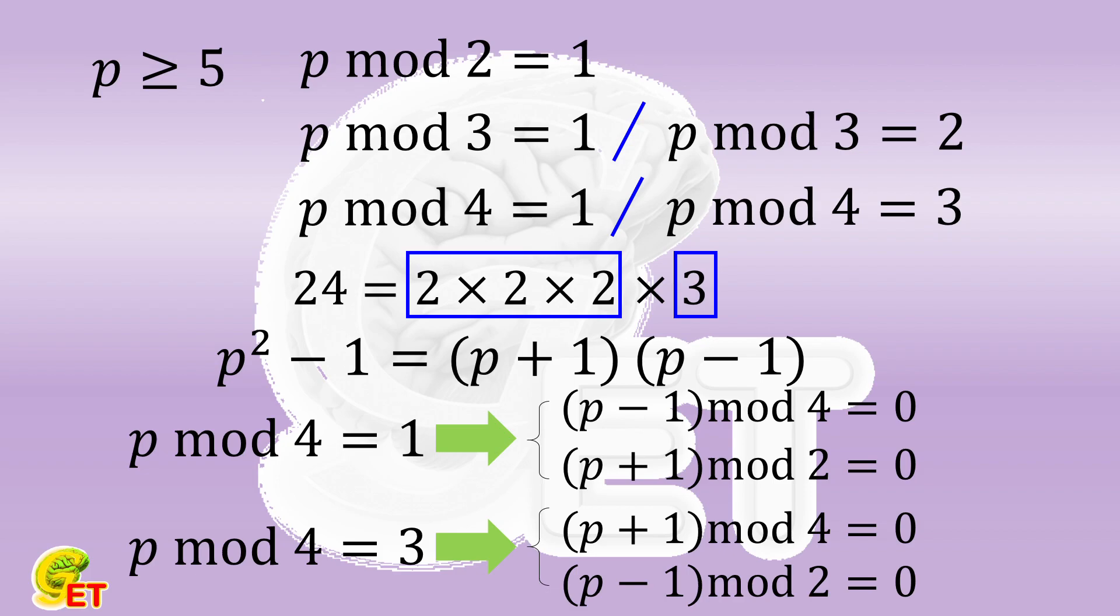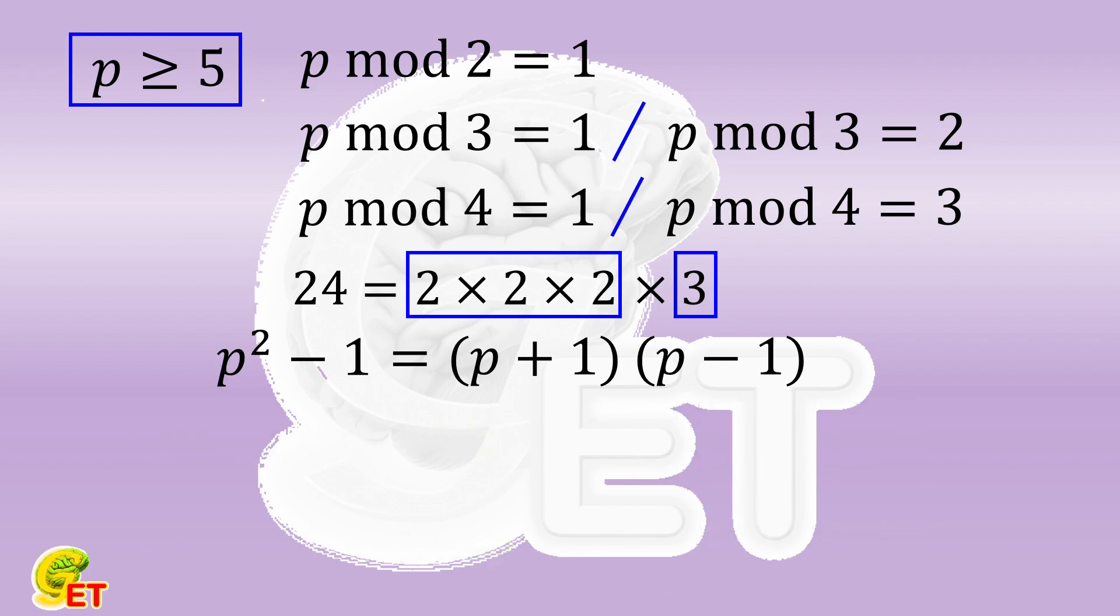So the final answer is indeed that all the prime numbers that are not smaller than 5 fulfill the requirement, that the square of p minus 1 is divisible by 24.